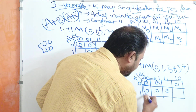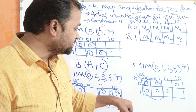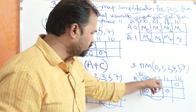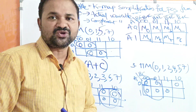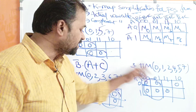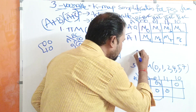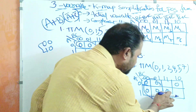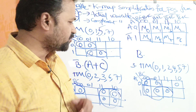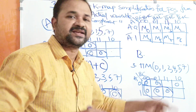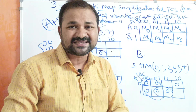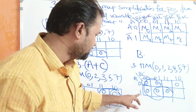For the last problem, we can make four cells as one group. A changes from 0 to 1 so we ignore A. Observing the BC part, C changes from 0 to 1 so we ignore C. The first value B is common and zero means actual variable, giving B. So this group contributes the term B. We must also cover the remaining zero, so we merge two cells as a group — a two-cell group produces fewer literals than a single cell.